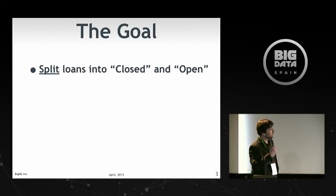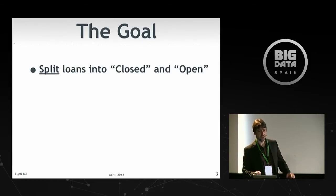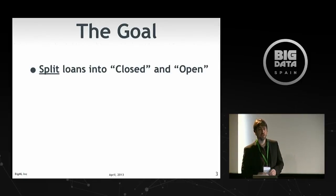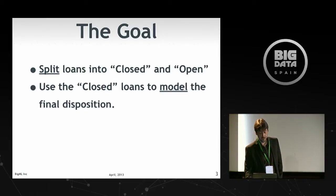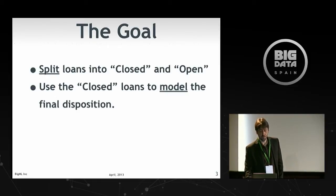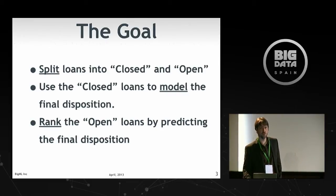The goal: the most interesting field is the loan status. You've got all these different kinds of statuses — some are what I call a final disposition: loans that are either paid off or gone into default. Others are open, still being paid on time or late. I want to split these into closed and open, use the closed loans to create a model that predicts final disposition, then go through all the open loans and rank them by making predictions. We'll also do a little anomaly detection and clustering.